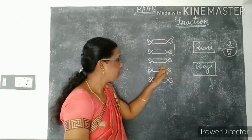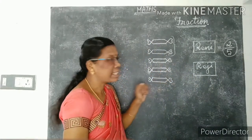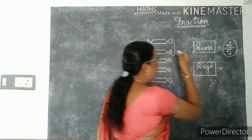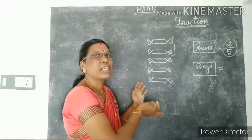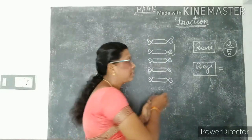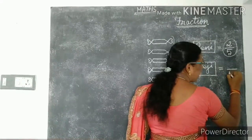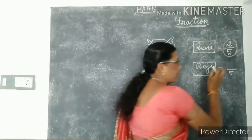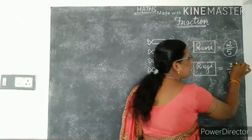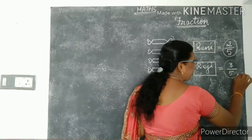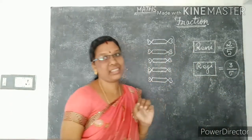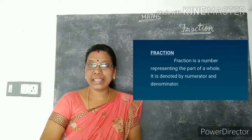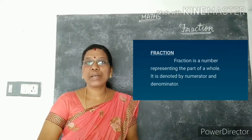Next, Reggie got three chocolates. So out of five, she got three. Total number of chocolates is five, out of which she got three chocolates. So three by five — this is also a fraction. The fraction is a number representing the part of a whole.